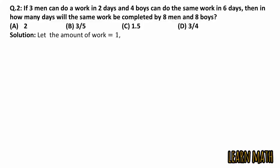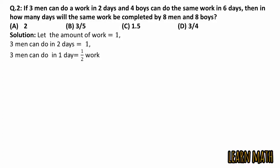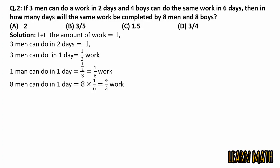Let the amount of work equal 1. Since 3 men can do the work in 2 days, 3 men do 1/2 the work in 1 day. Dividing by 3, 1 man can do 1/6 of the work in 1 day. Multiplying both sides by 8, 8 men can do 8 × (1/6) = 4/3 of the work in 1 day.